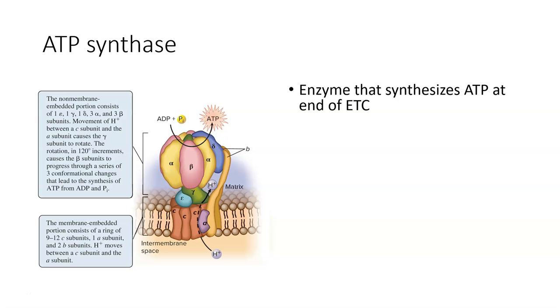So ATP synthase, really simple. This is the enzyme that's actually going to make or synthesize ATP at the very end of the electron transport chain. Remember, our electron transport chain are the little proteins that we had within the membrane that are going to allow hydrogen molecules to create this gradient up top.